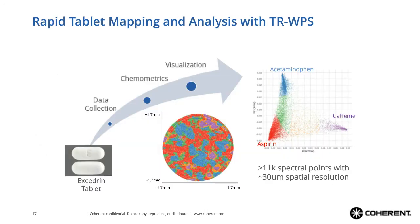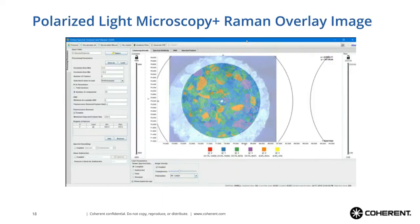One example is mapping of an Excedrin tablet. You can rapidly collect data over a fairly large area of the tablet, perform chemometric analysis, and visualize the results. Using principal component analysis and clustering, we identified the three principal compounds within the Excedrin tablet: aspirin shown in red, acetaminophen shown in blue, and caffeine in purple, and how they are physically distributed across the tablet. By incorporating this tablet map with the underlying polarized light microscope image, you gain a better understanding of which compounds are located where and can identify specific areas of interest for further investigation.